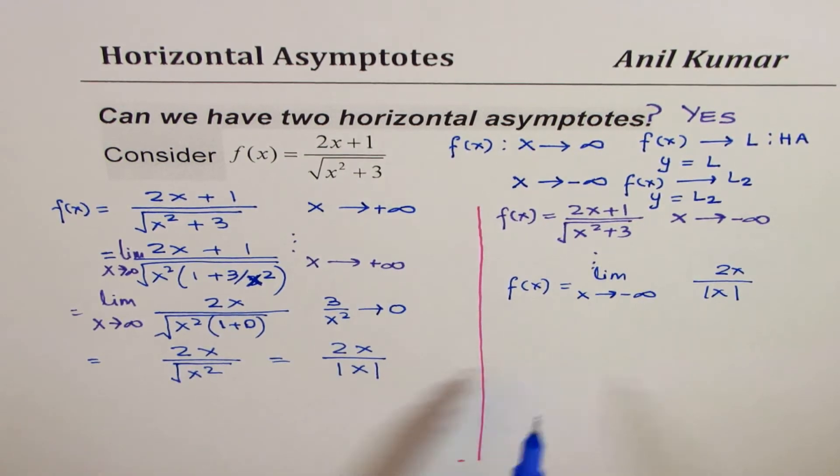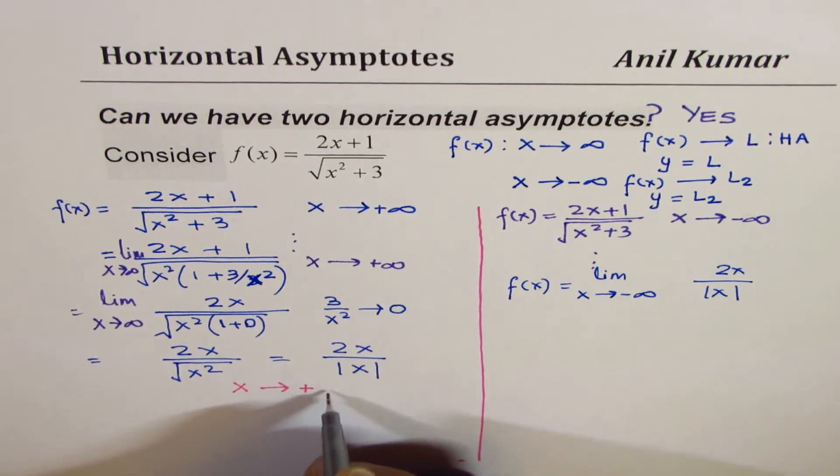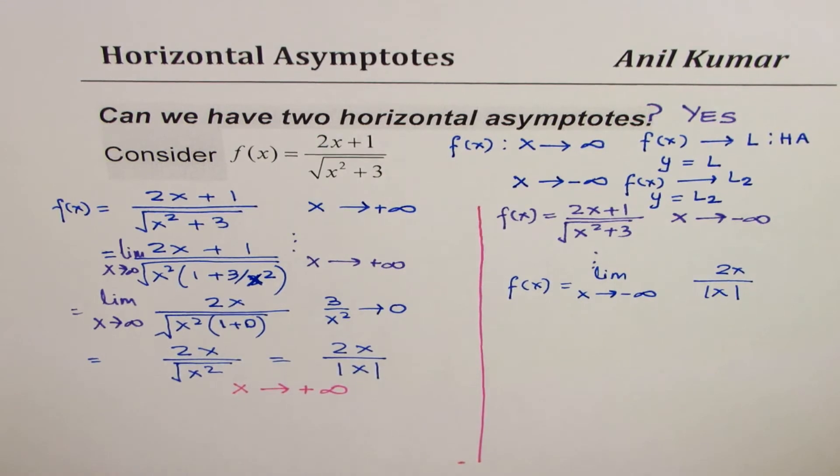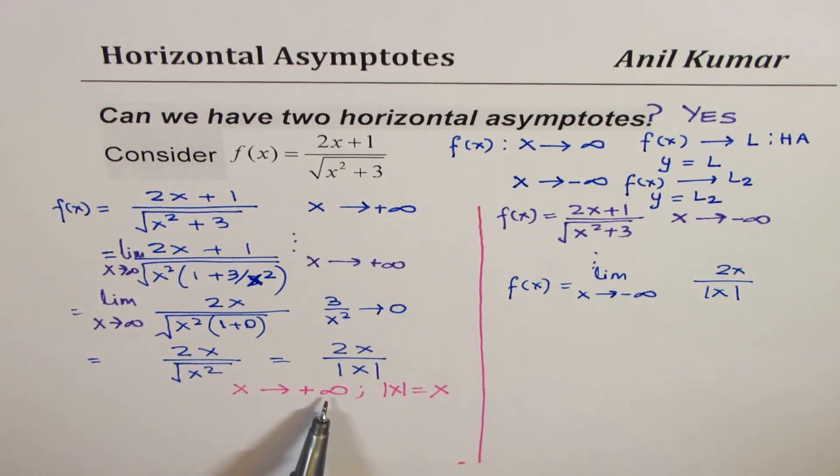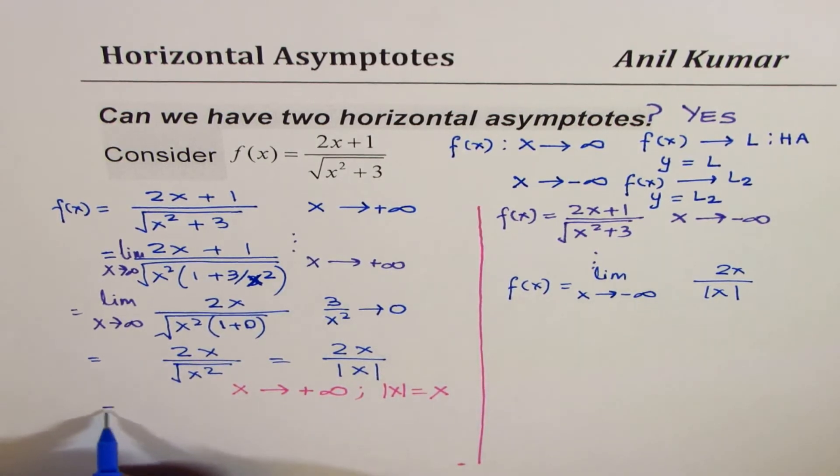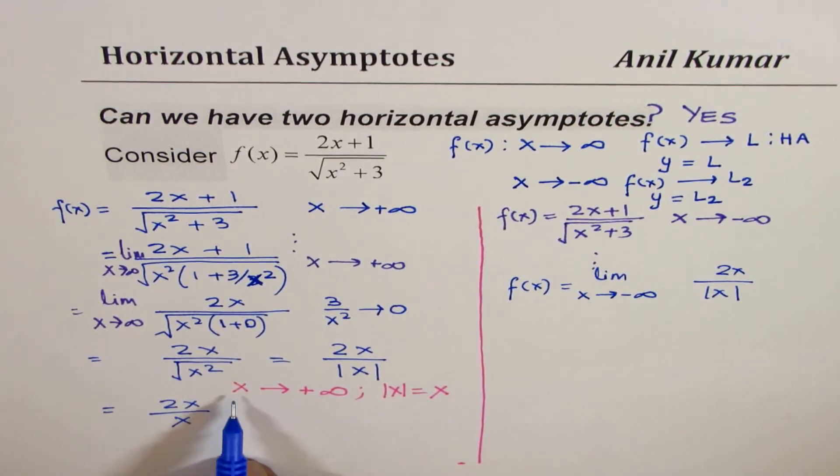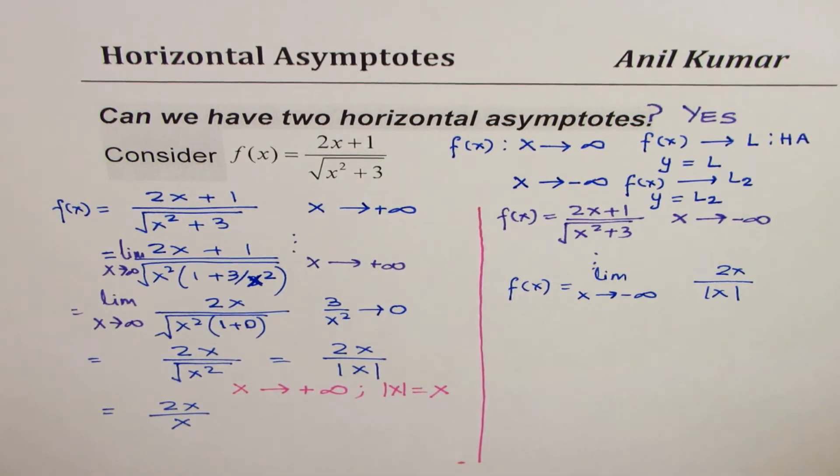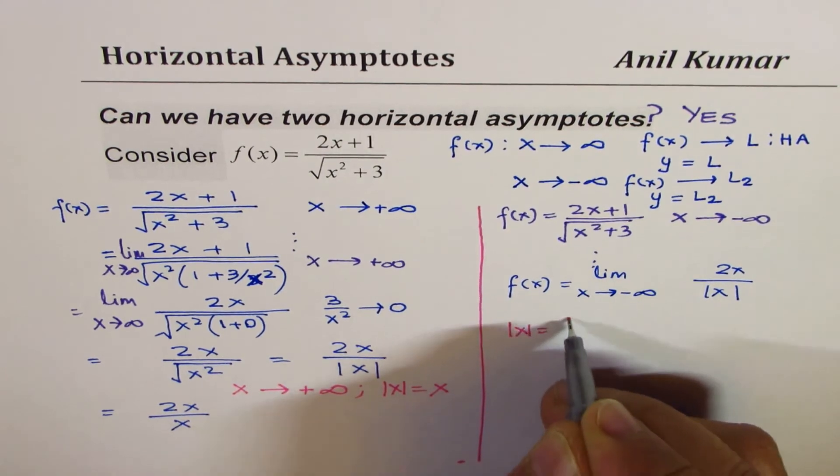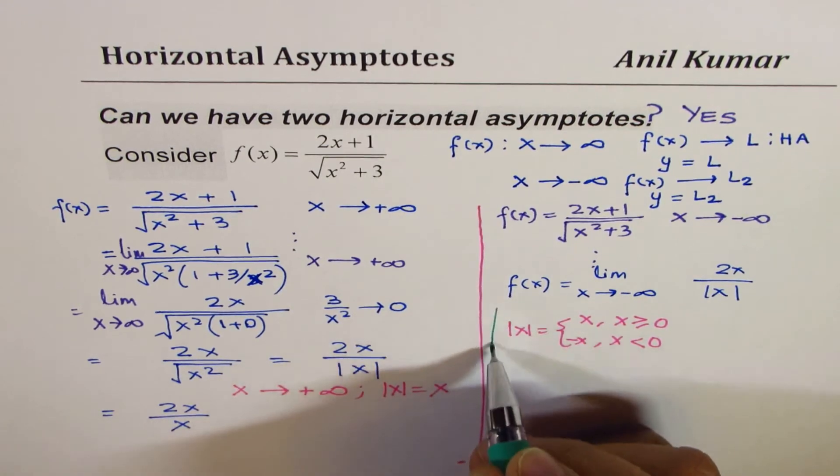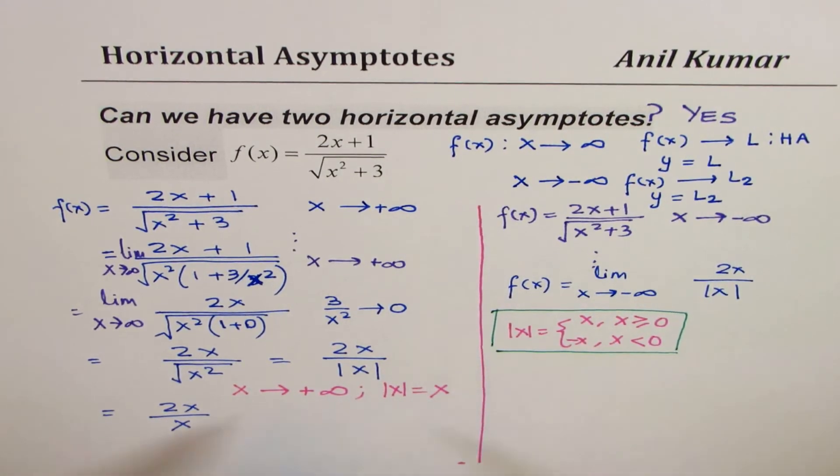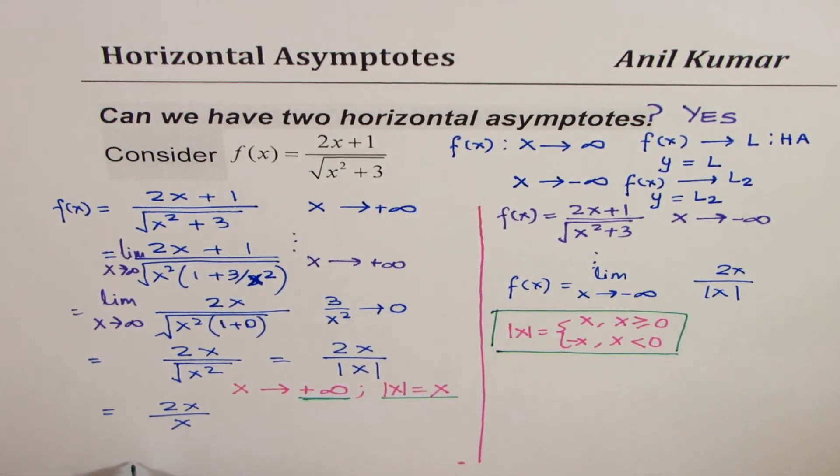But now here we have a huge difference. On this side, if I'm considering x to be a positive value, maybe large, in that case the numerator is positive. In that case you can also write that absolute value of x is x. So if I consider a positive value, my expression will become 2x over x. Let me write here: absolute x is defined as positive x when x is greater than or equal to 0, and negative x when x is less than 0. That is the definition of absolute x which we are going to use. So when we are approaching positive infinity, absolute x is just x. Now these two x's cancel and we get 2.